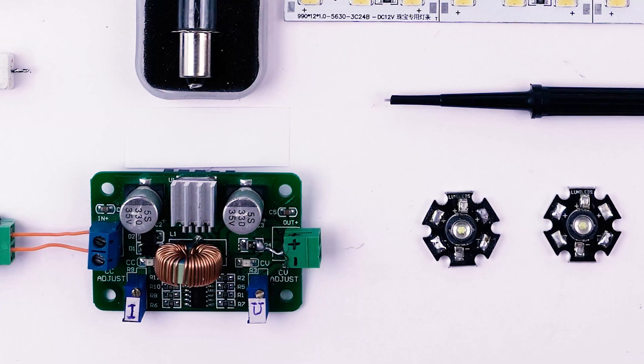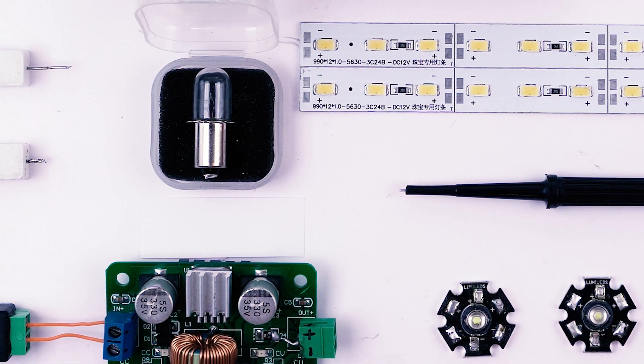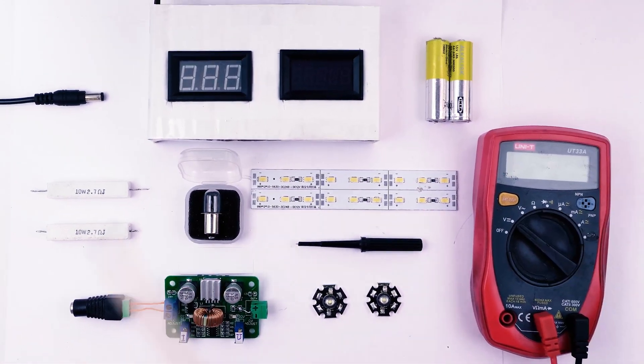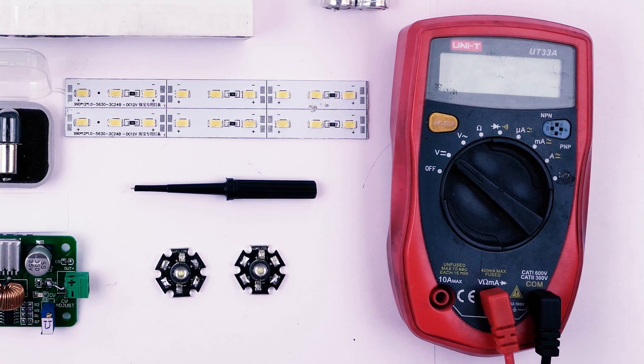We will use a voltage regulator to power an LED and a regular light bulb, connected in parallel. We will observe the current flowing through each of them separately, using two ammeters, and the voltage, which will be the same for both, using a multimeter.